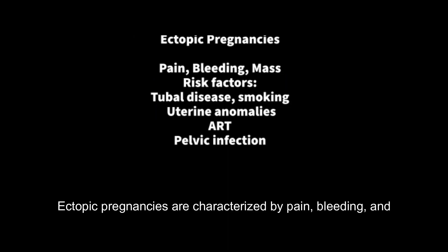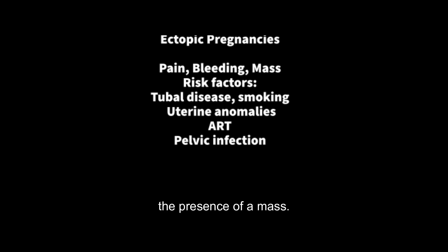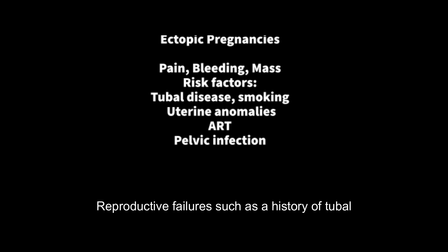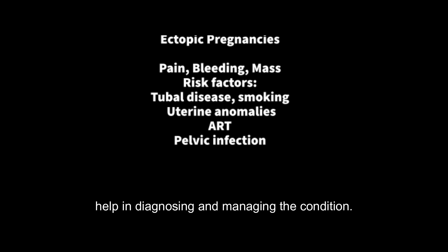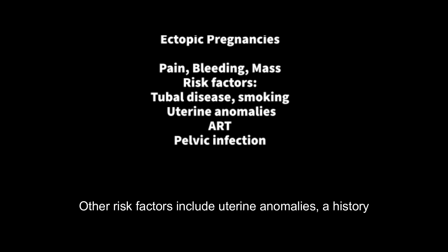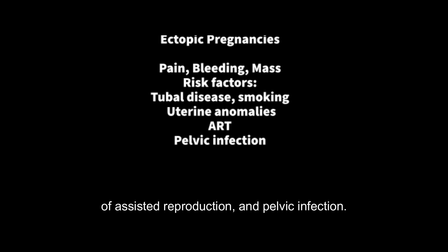Ectopic pregnancies are characterized by pain, bleeding, and the presence of a mass. Reproductive failures, such as a history of tubal disease and smoking, are risk factors that can help in diagnosing and managing the condition. Other risk factors include uterine anomalies, a history of assisted reproduction, and pelvic infection.